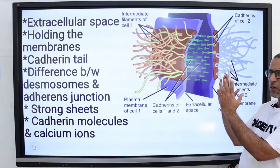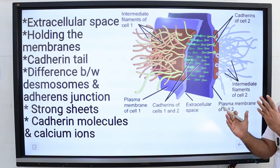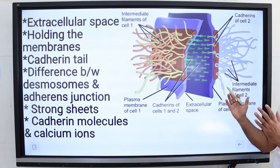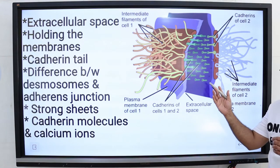Desmosomes connect adjacent cells together, ensuring that cells in organs and tissues that stretch, as in the case of skin and cardiac muscle, remain connected as unbroken sheets.